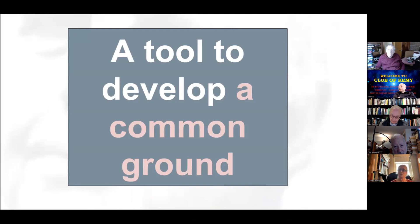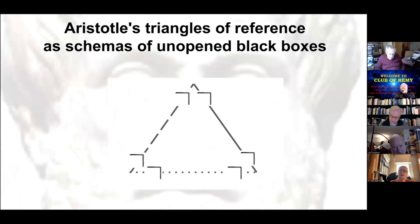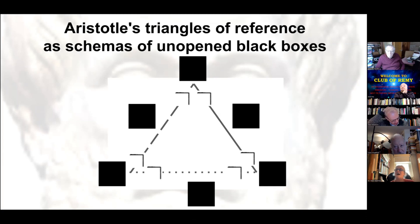I set this up as a practical, concrete tool — I have actual boxes here — to develop common ground with Lou, Jason, Jerry, Larry, and anyone else. In my case, when I open the box I find Aristotle's triangles of reference. Why that tool? Because they've been very helpful to me. Looking at a triangle you see three corners and three sides, but I also see six black boxes.